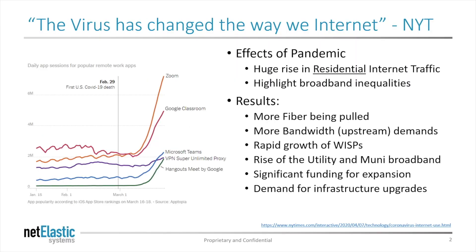So why do we care and what's different? Well, the pandemic has changed the world. It's driven a huge rise in residential Internet traffic due to factors like work from home, telemedicine, online shopping, and more. This has resulted in more fiber being deployed, more demand for bandwidth — especially upstream bandwidth — the rapid growth of WISPs and rural telcos, the rise of utility and municipal broadband networks, significant funding from federal and state agencies, and a huge demand on service providers to upgrade their infrastructure.